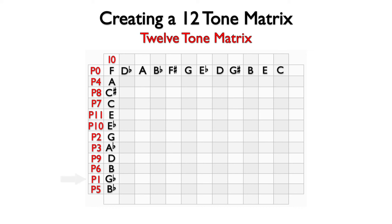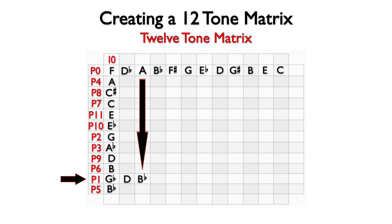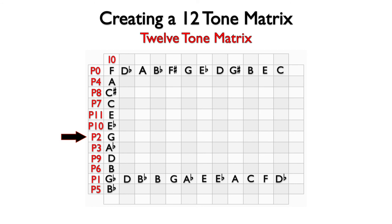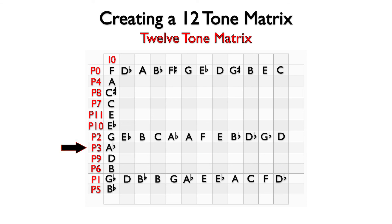Let's begin by transposing prime 1. Since it is only a half step from prime 0, it will be fairly easy to transpose. The note a half step above F is G-flat or F-sharp. I will use flats to simplify, but you could use sharps or a combination of both. The note a half step above D-flat is D, and the note a half step above A is B-flat. We can work our way through the remainder of the notes of prime 0 to find the notes of prime 1. Next, we can move to prime 2 by finding each of the notes that are a half step above the notes of prime 1. Continuing in this manner, we would next find the notes of prime 3 as up a half step from the notes of prime 2. Using this system, we can gradually find all of the notes of the 12-tone matrix based on our original 12-tone row.